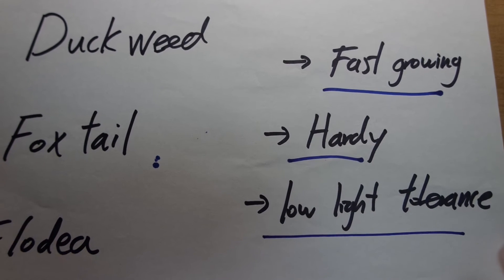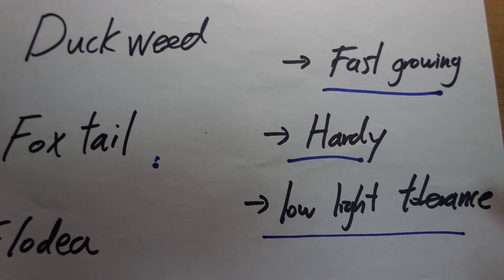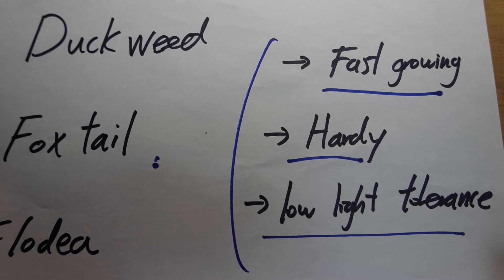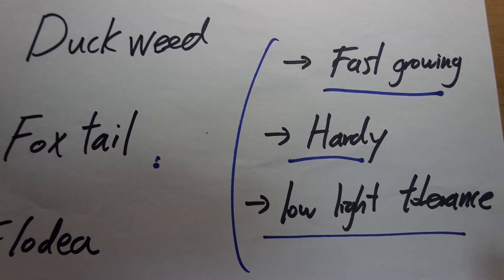And they can tolerate low light because oftentimes in an artificial environment, producing an amount of light that is equivalent to the sun, it's kind of difficult. So they have to be tolerant of low light. And these three properties make them very difficult to kill and very difficult to screw up.